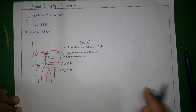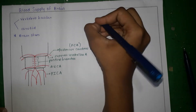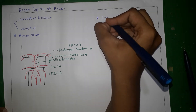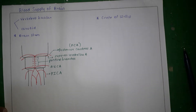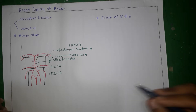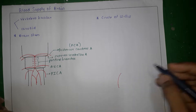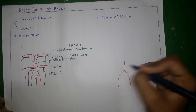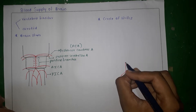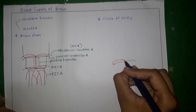This completes the blood supply of the brain stem. Next we will focus on something important called the circle of Willis, which is mainly located at the base of the brain. To understand its formation: two vertebral arteries join to form a basilar artery, and this basilar artery divides to give the posterior cerebral arteries.